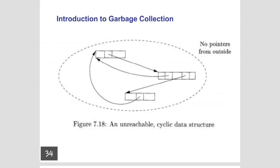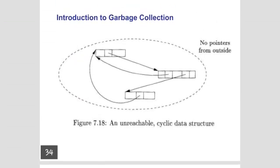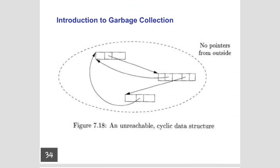This is an unreachable cyclic data structure. Here, in a separate reference counting block, suppose we have three objects: x, y, and z. Whenever these blocks are reachable and related to each other — when x is accessible but in the future x is no longer required — the reference counting pointer for x is set to 0.